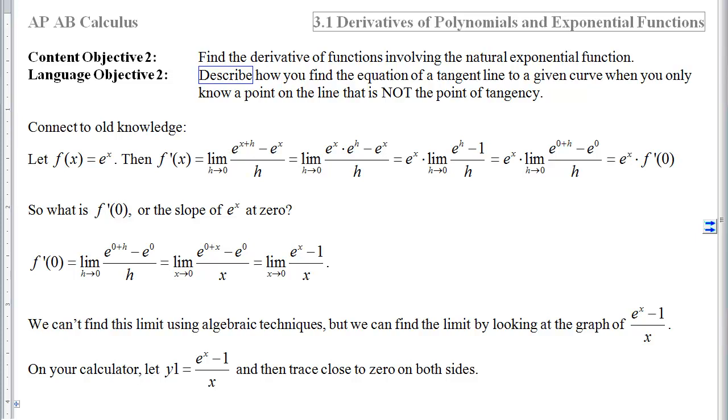So first we're going to connect to our old knowledge. Let's let f of x equal e to the x. If f of x equals e to the x and we want a shortcut for its derivative, we're going to have to backtrack to the definition of the derivative, which is f prime of x equals the limit as h approaches 0 of f of x plus h minus f of x over h. If I now factor out that e to the x, I'll be left with an e to the x which has no h's in it, so it's independent of the limit, times the limit as h approaches 0 of an e to the h minus 1 over h.